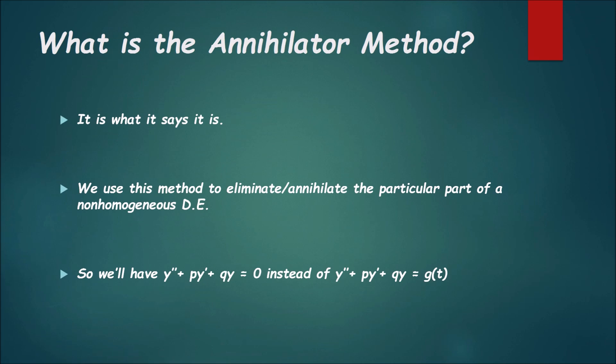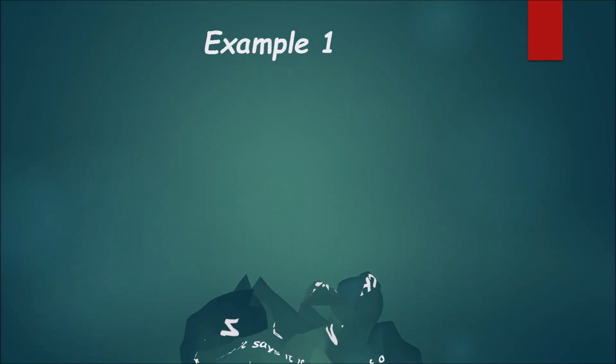The reason why we eliminate it is so we can make it homogeneous, and we know how to solve homogeneous differential equations of the second order. So let's go with this example. You're given this Diff EQ here: y double prime minus 3y prime minus 4y equal to 10e to the 2t.